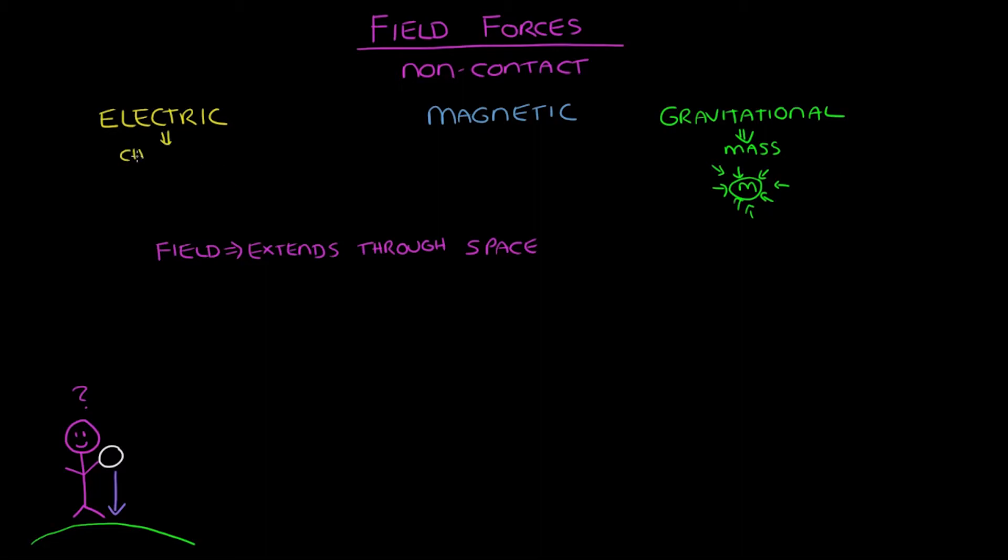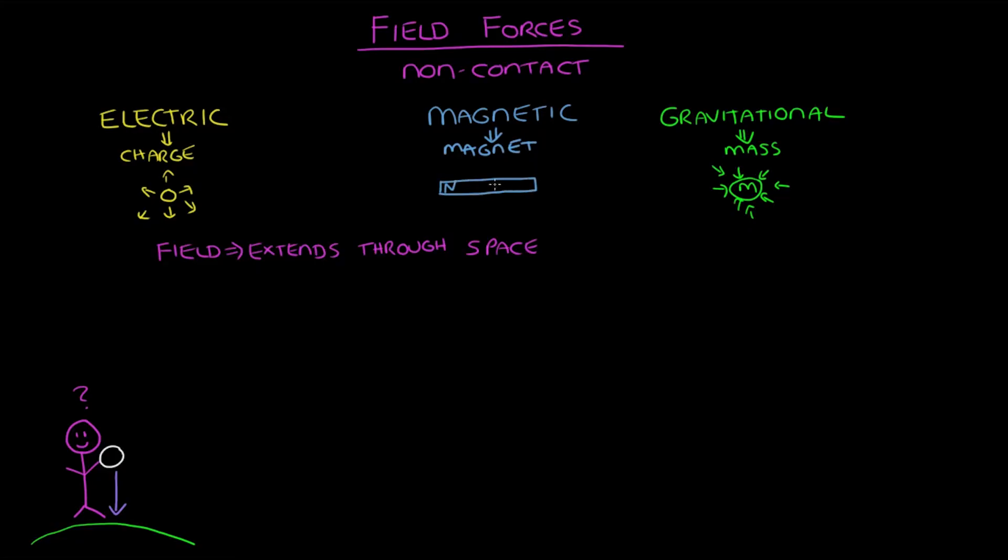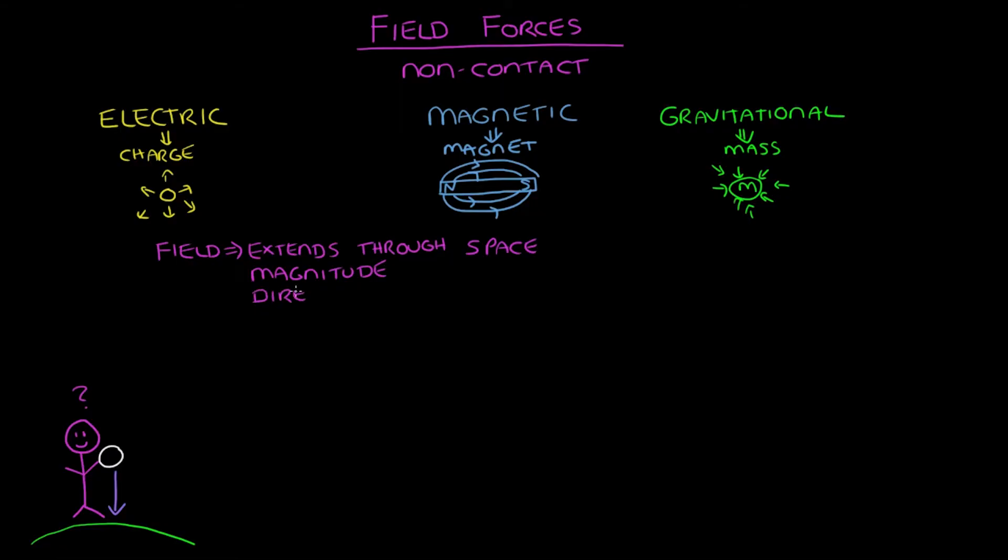Electric forces affect charged objects. So an electric field surrounds any object with a net charge, and the direction of this field will depend on the charge. Magnetic fields will affect magnets and any other material with magnetic properties. Each spot on a field has two things associated with it, magnitude and direction. And these help us predict what forces objects will experience when they're in the field.